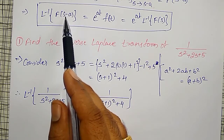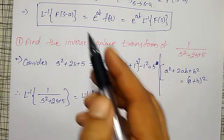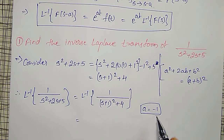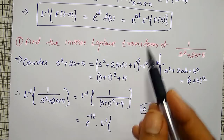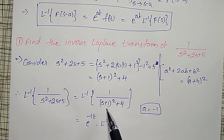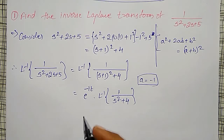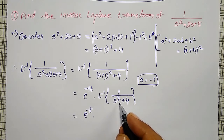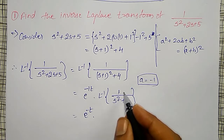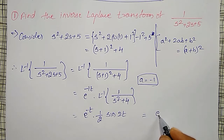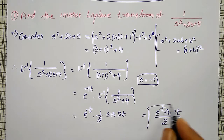That gives e to the power minus t into the Inverse Laplace Transform of 1 divided by s squared plus 4, which is s squared plus 2 squared. This is in standard form. Therefore, it equals e to the power minus t into 1 over 2 times sine 2t. The final required answer is e to the power minus t into sine 2t divided by 2.